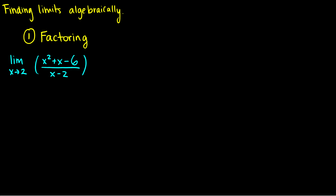For instance, I have an example here: the limit as x goes to 2 of x squared plus x minus 6 over x minus 2. We can't just plug 2 into this limit because then we'll end up with 2 minus 2 on the bottom, which would equal 0, and we can't divide by 0. So in order to get around this, we can factor and hope that something cancels.